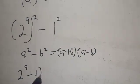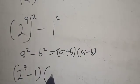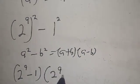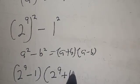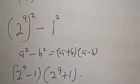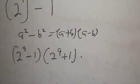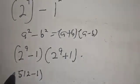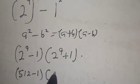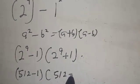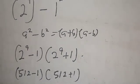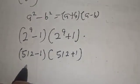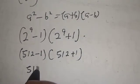This gives us (2 raised to power 9 minus 1) multiplied by (2 raised to power 9 plus 1). Now 2 raised to power 9 is 512. So we have 512 minus 1, multiplied by 512 plus 1.